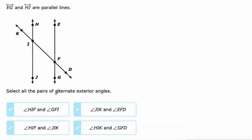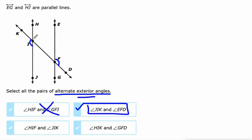Now we're looking for alternate exterior angles. Exterior means they fall outside the parallel lines, and alternate means opposite sides of the transversal. HIF — well, that's inside the parallel lines, so nope. JIK — that's exterior. What about EFD? That's also exterior and on opposite sides of the transversal, so that one works. HIK is exterior, and GFD — that's alternate exterior. One's above the transversal, one's below, and they're both outside the parallel lines. So those are alternate exterior.